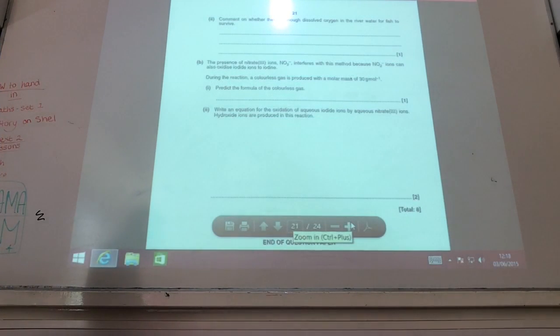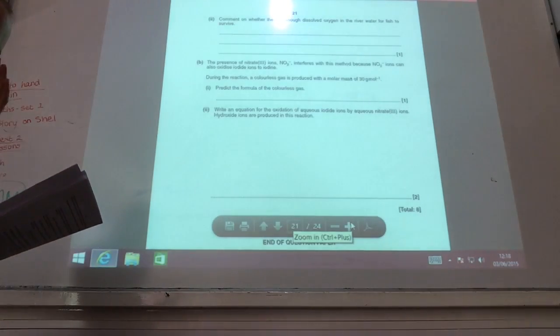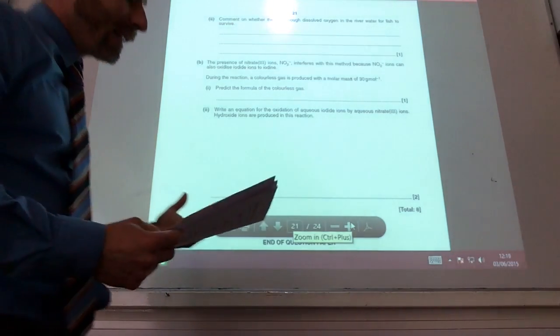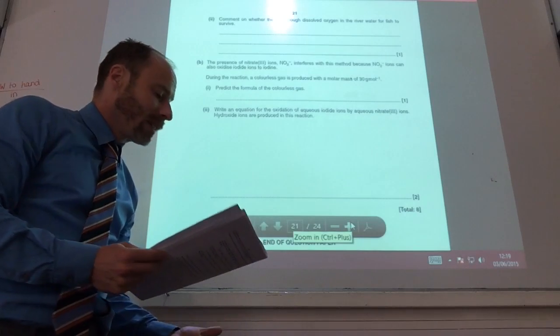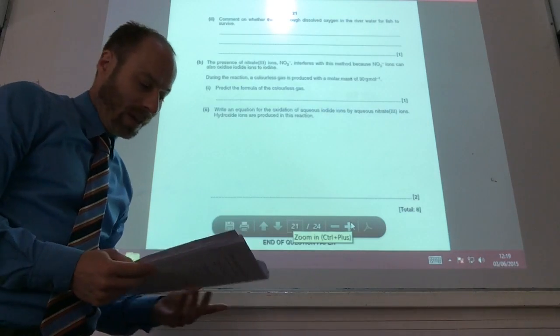So the final couple of questions: comment on whether there's enough dissolved oxygen. Yes, there is, because we worked out to be 7.872 milligrams per decimeter cubed, and the fish require it to be higher than 5, so we're okay.